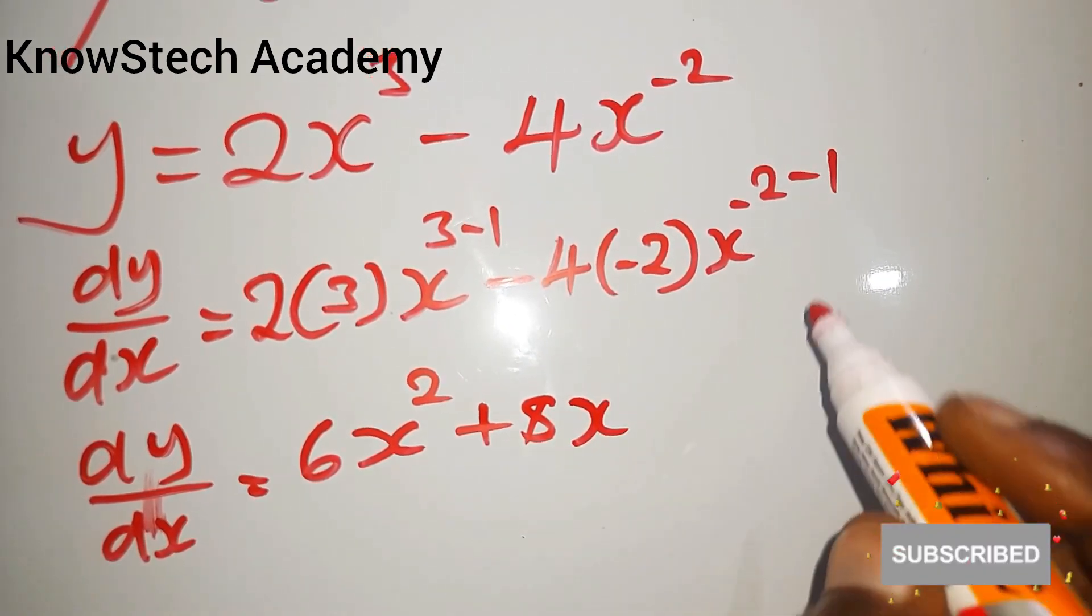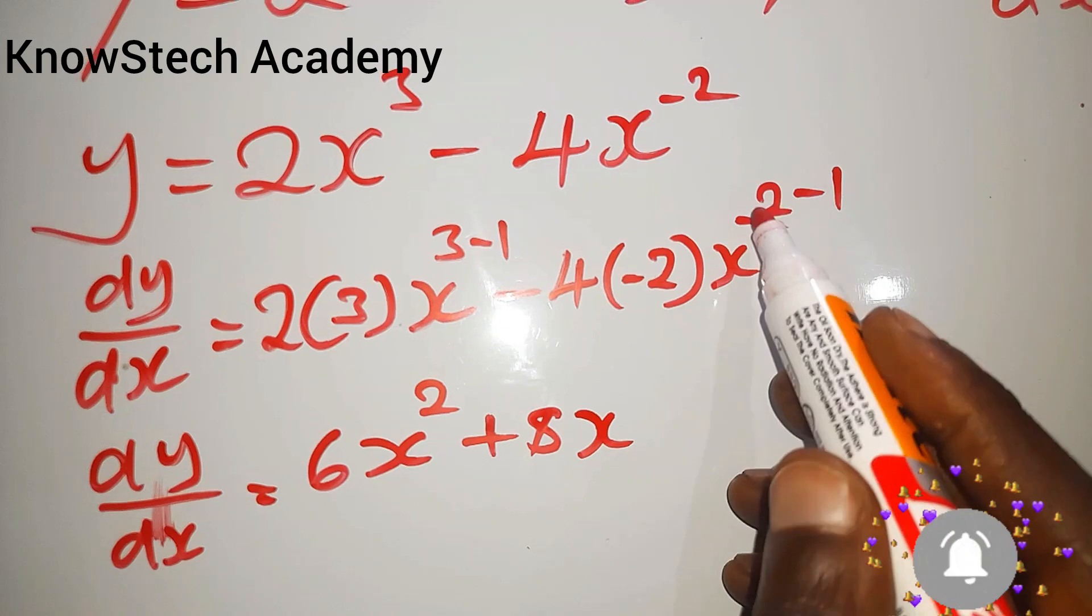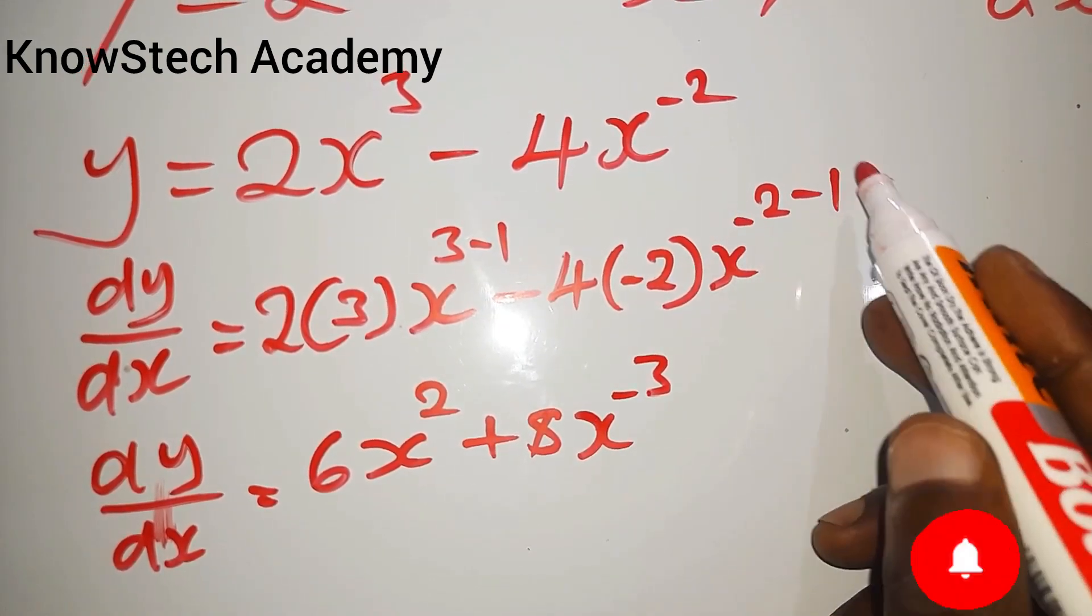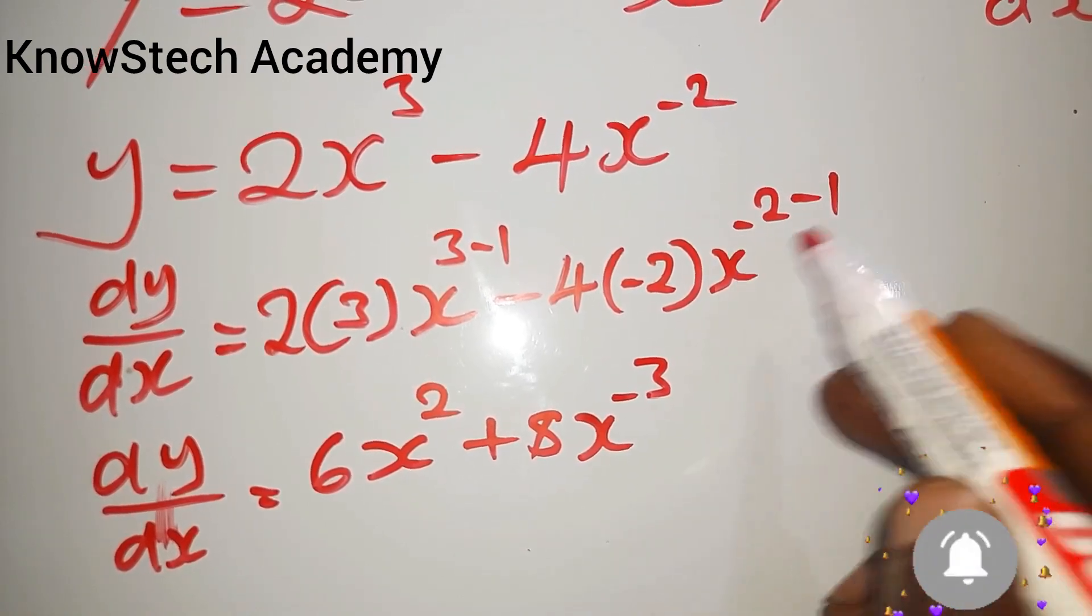8x to the power negative 3. Remember when you have two negative numbers you simply add them and then maintain the negative sign.